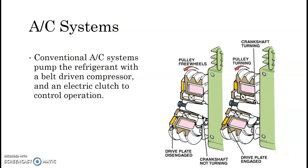So conventional AC systems pump the refrigerant with a belt-driven compressor and an electric clutch to control operation. So this right here should look familiar. You have your coil right here that gets activated, and that activates this clutch through electromagnetism, which links the pulley to the clutch, which is splined to the arbor of the AC compressor, thereby engaging pump activation or not by turning on this electromagnetic field.